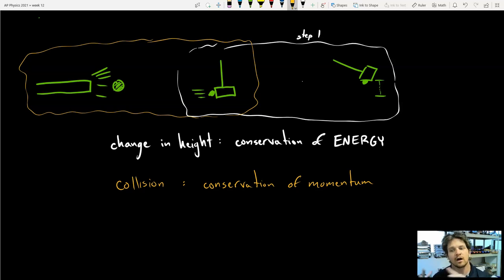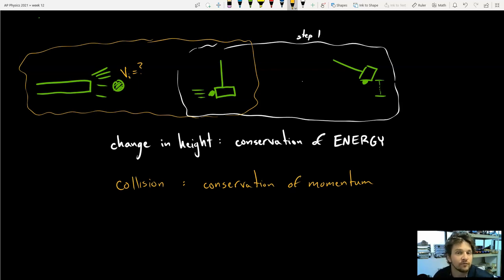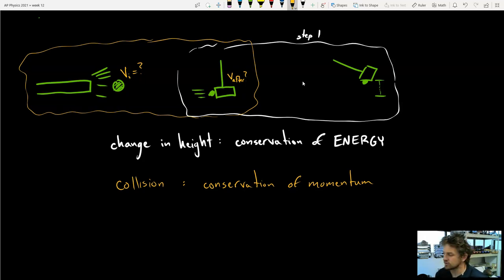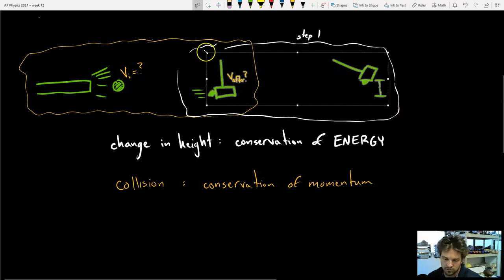We're ultimately trying to figure out the initial velocity, and we're going to work our way back. I'll start with conservation of energy, because for conservation of momentum I need to know the velocity after the collision — and conservation of energy can help me figure that out.